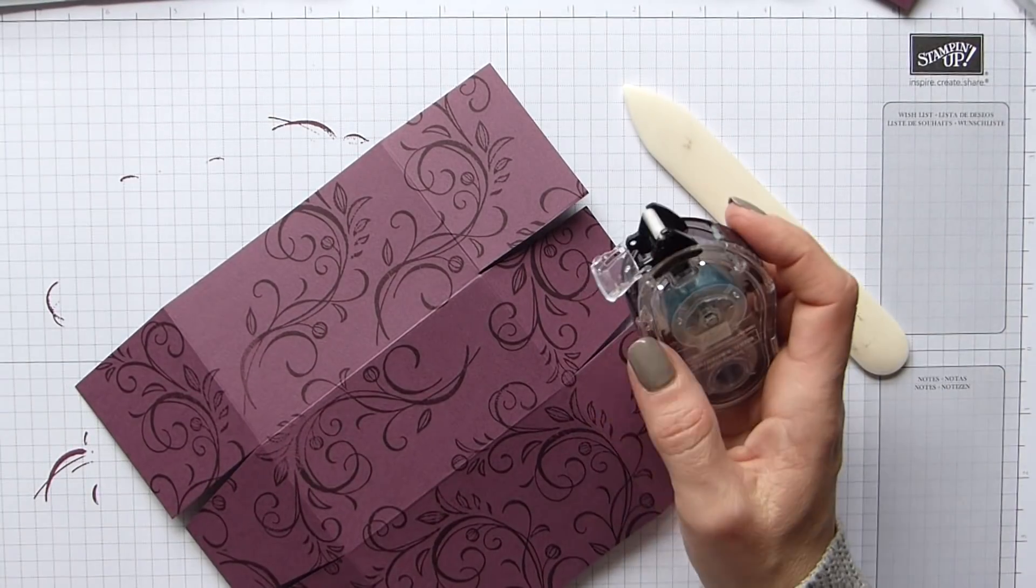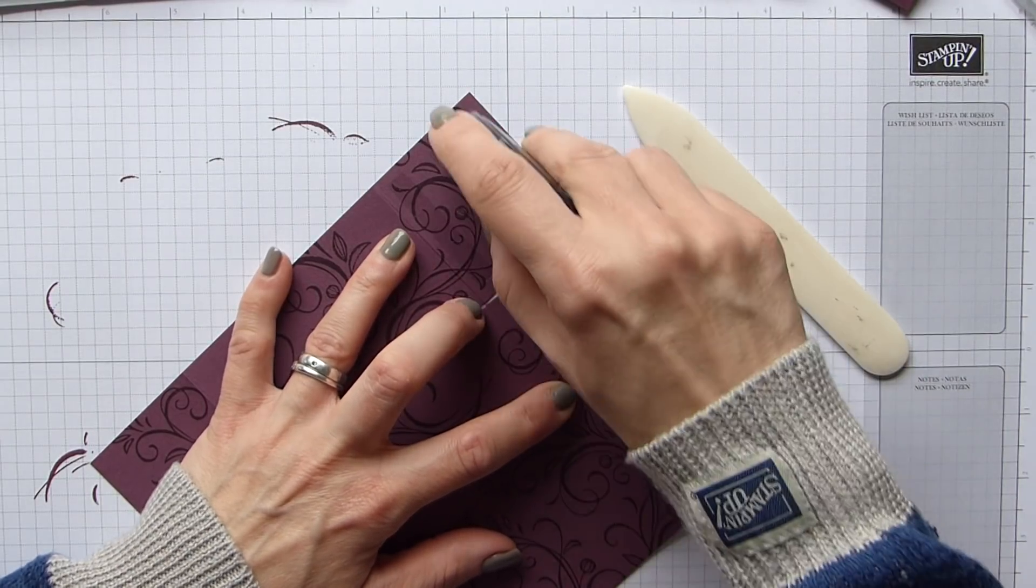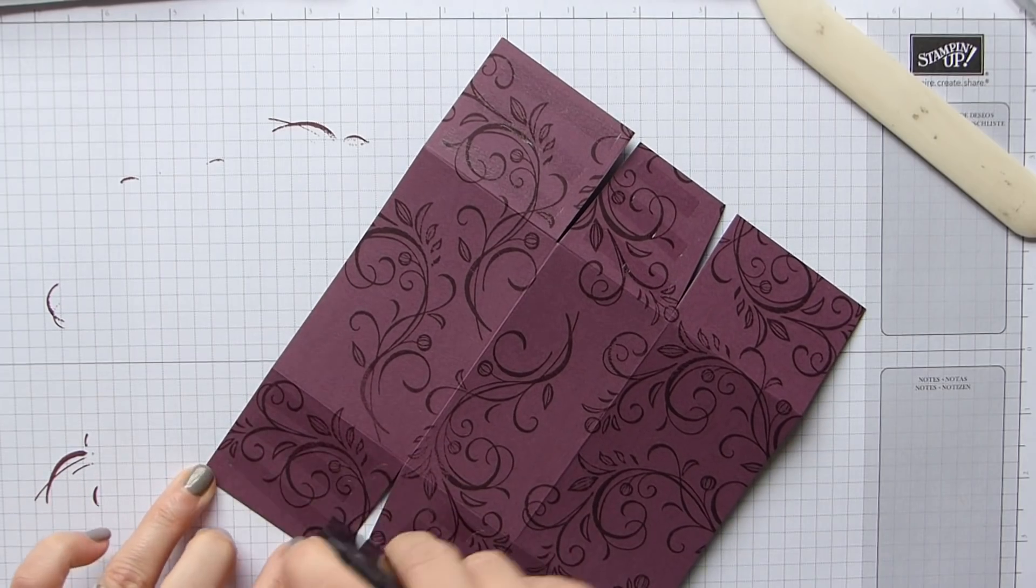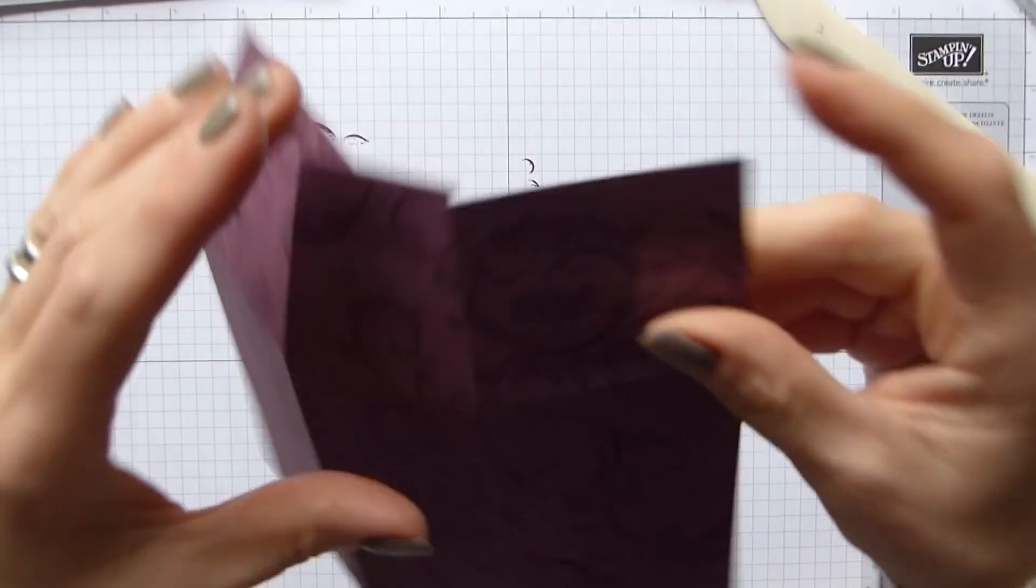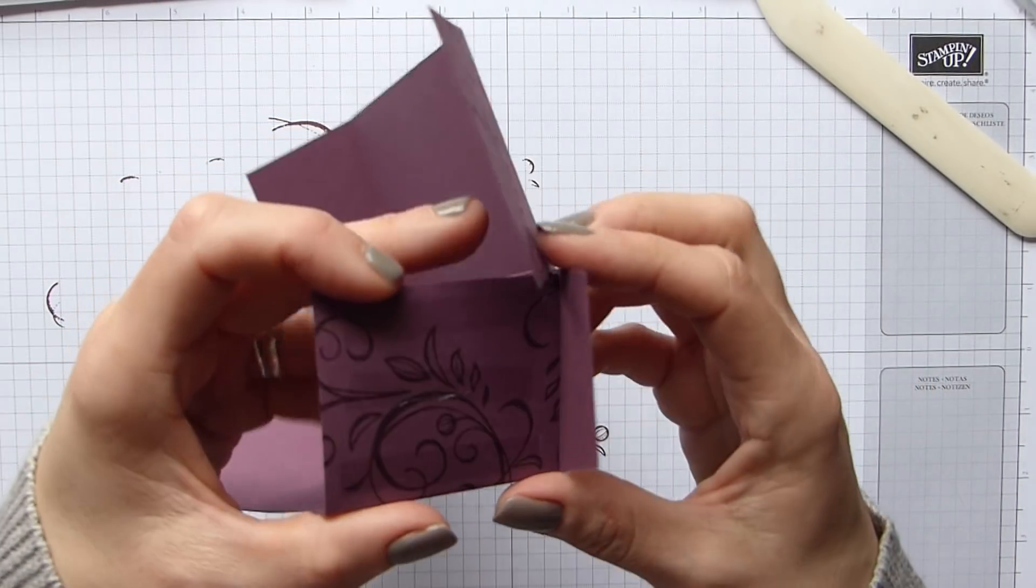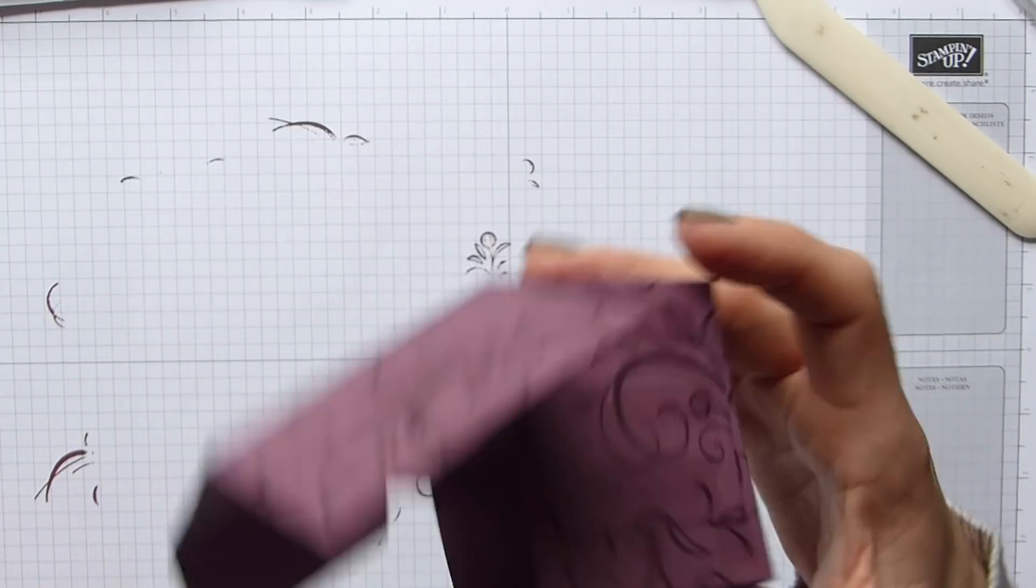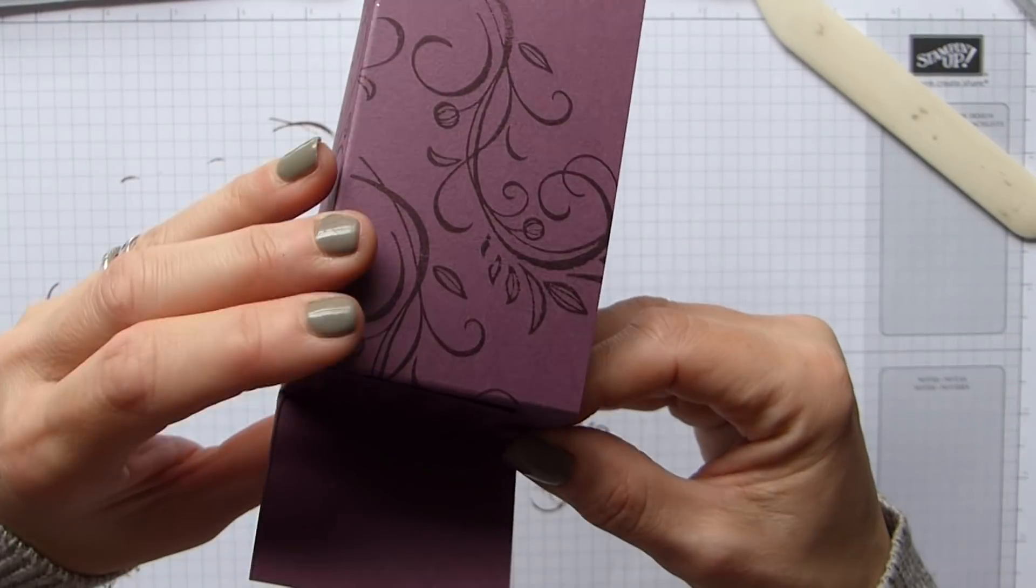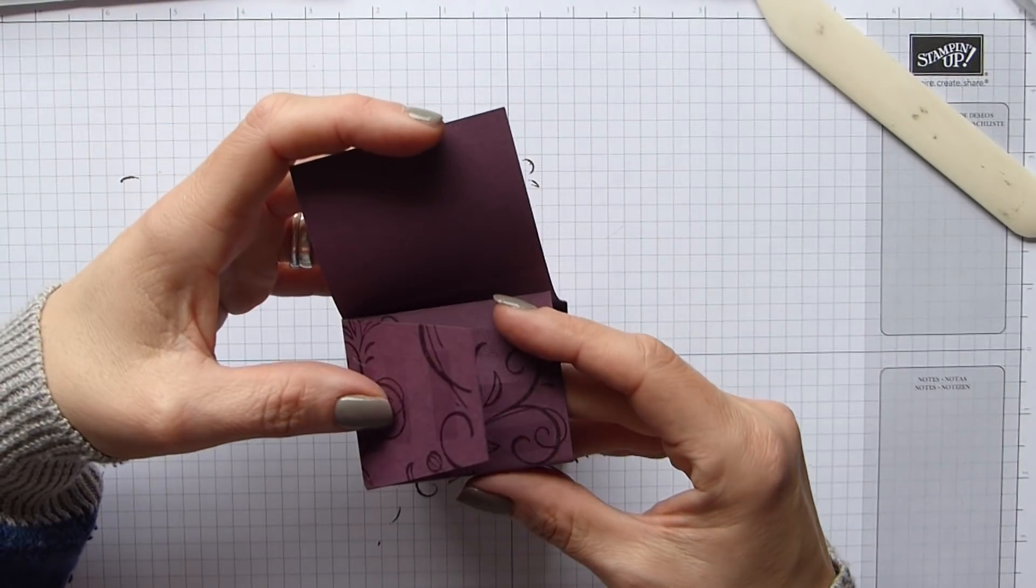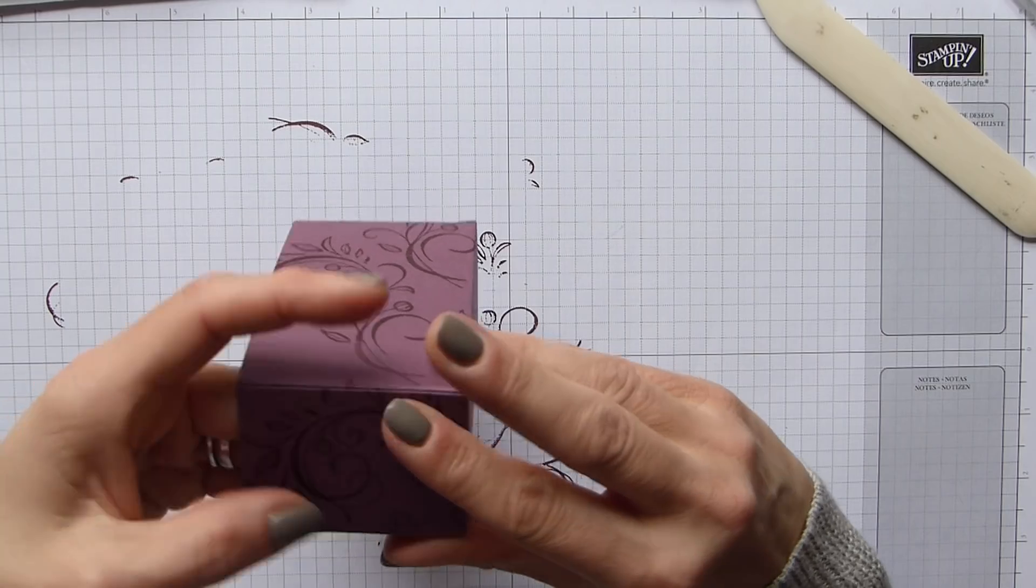Okay and then again I'm just going to use some snail again and I'm just repeating what I did with the base. And then we're just going to do exactly the same so adhesive side tucks in and we pop this over the top. And then we do exactly the same this one over the top there and then again repeat it with the other side. Line it all up nicely, there we go.